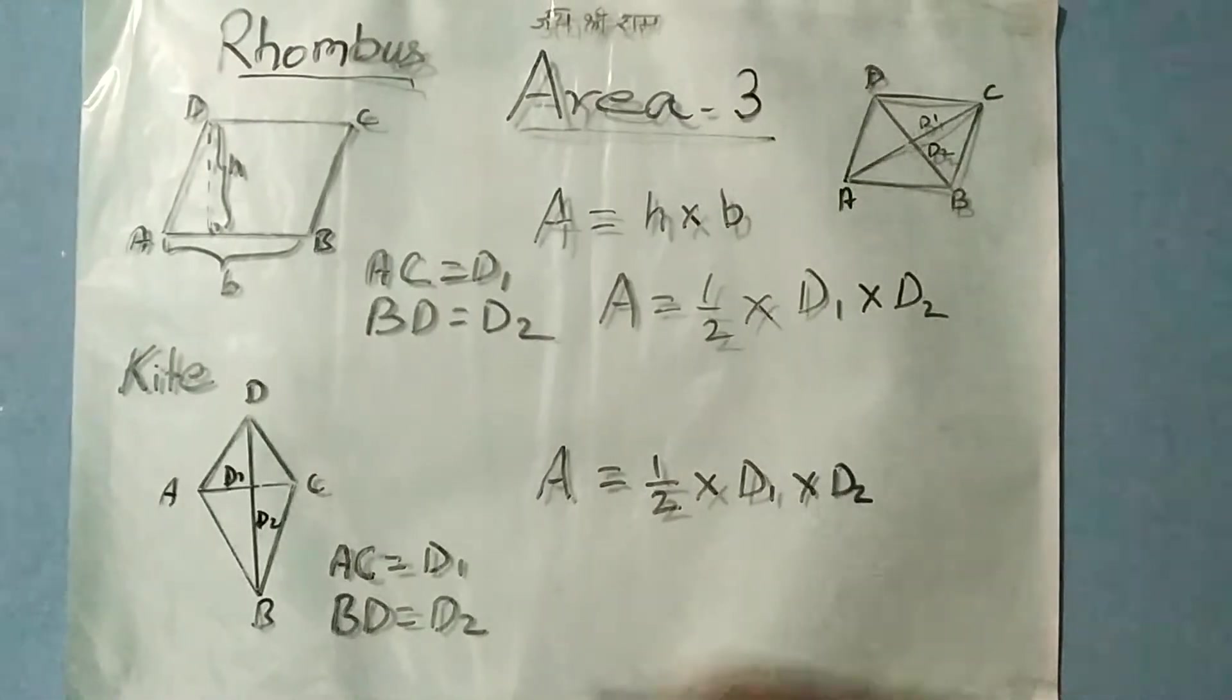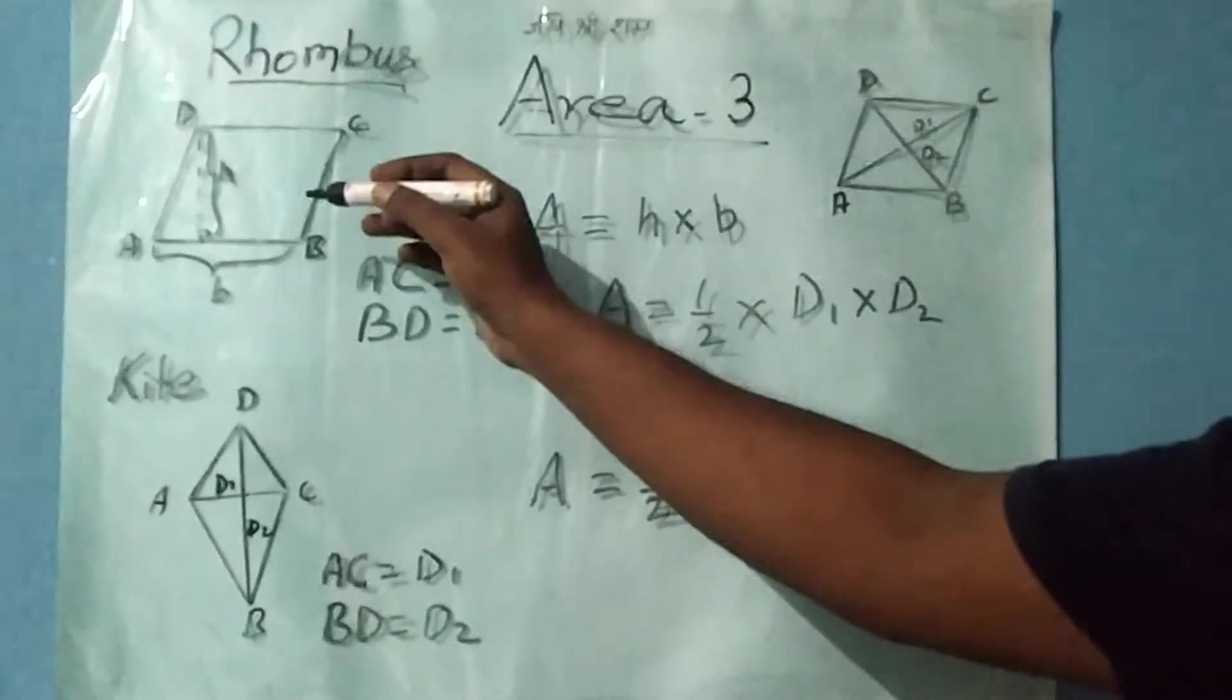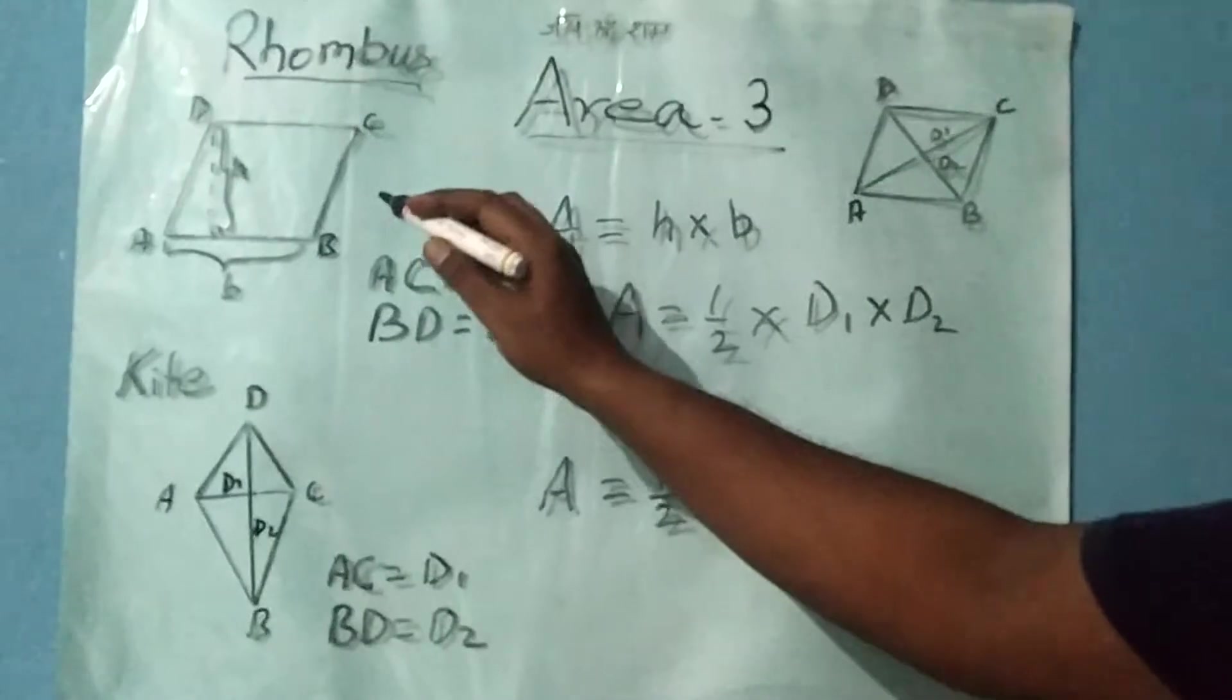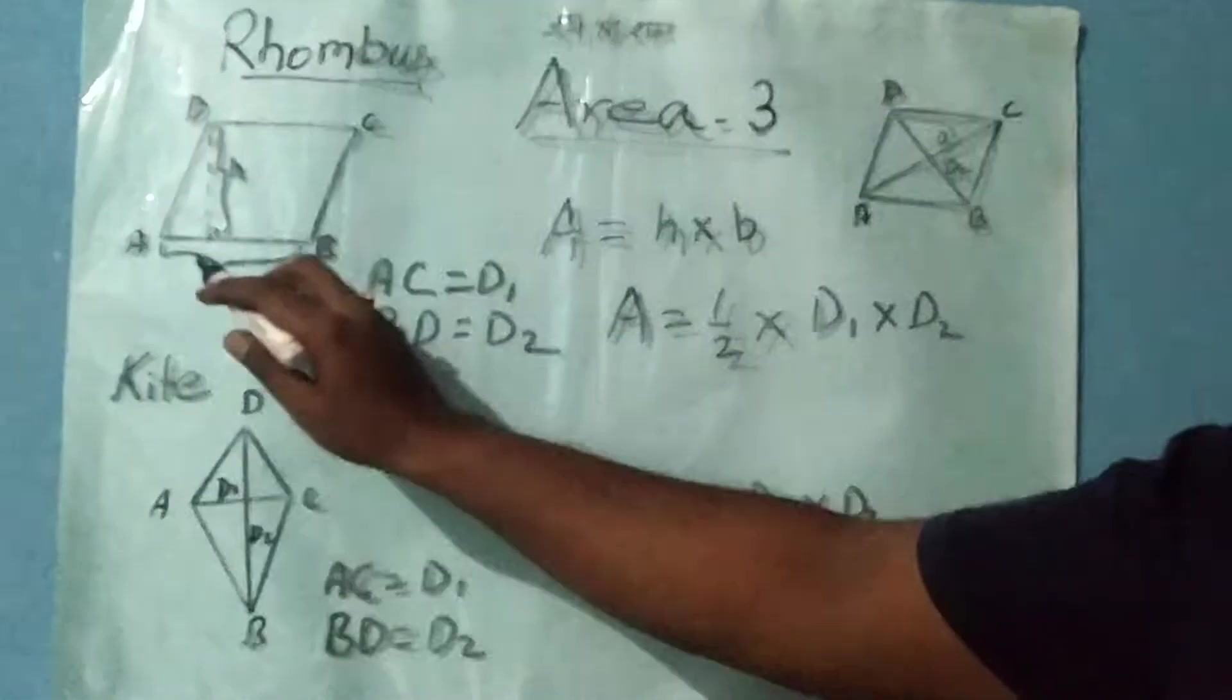To find the area of rhombus, since rhombus also acts like a parallelogram, the formula for the area of a parallelogram can be applied. Here this is the height and this is the base.